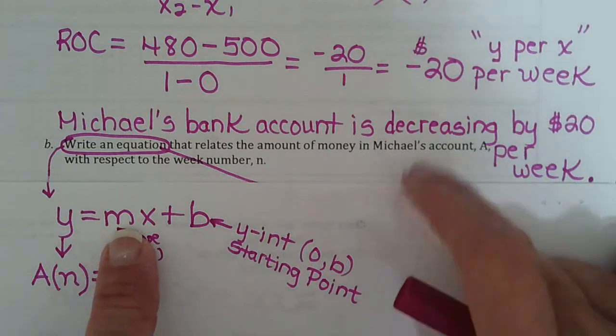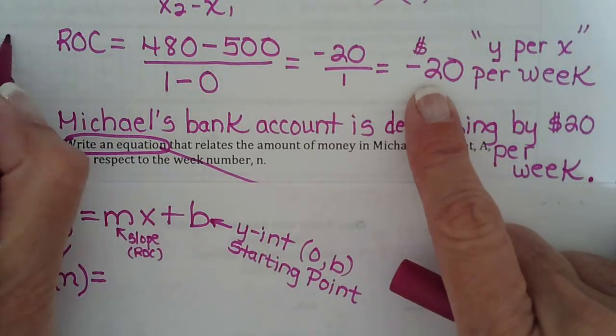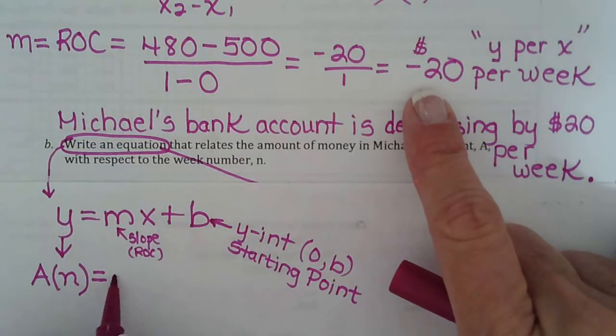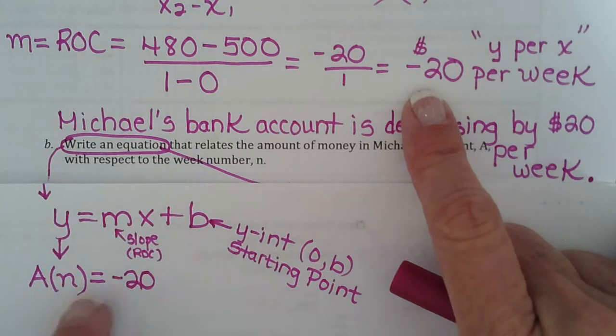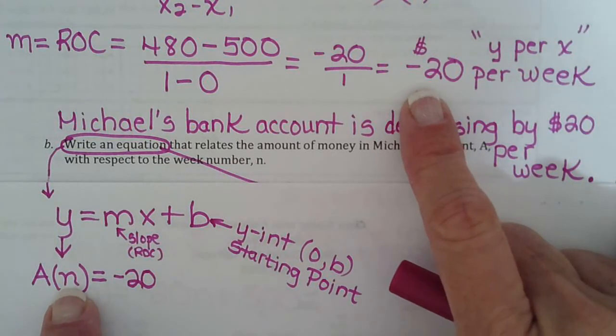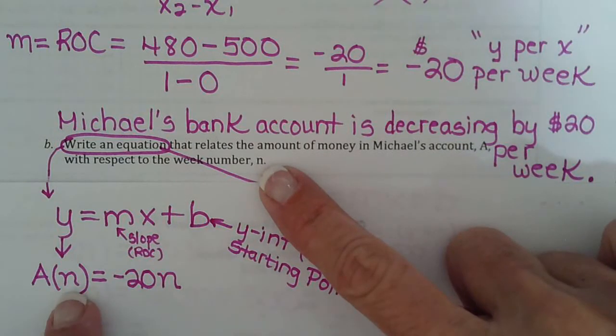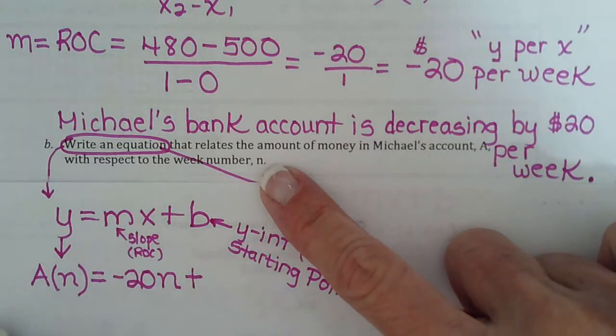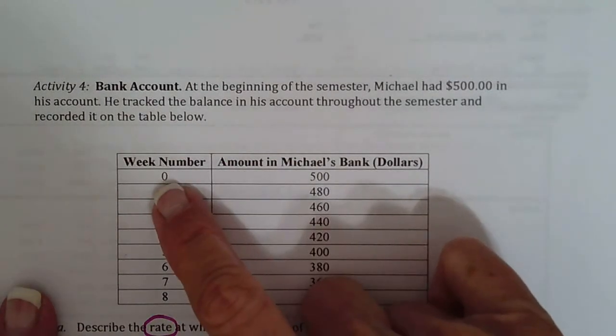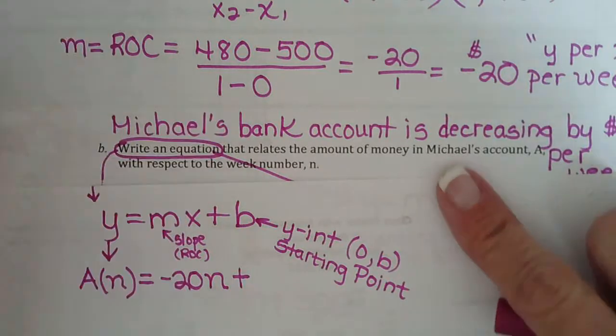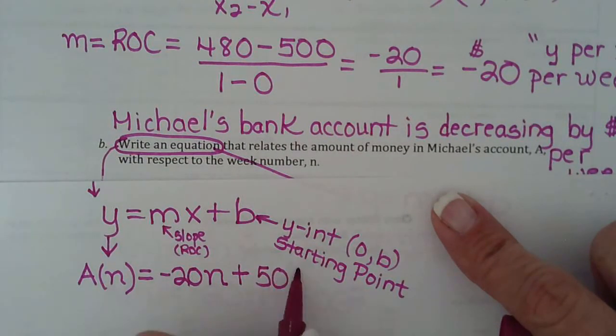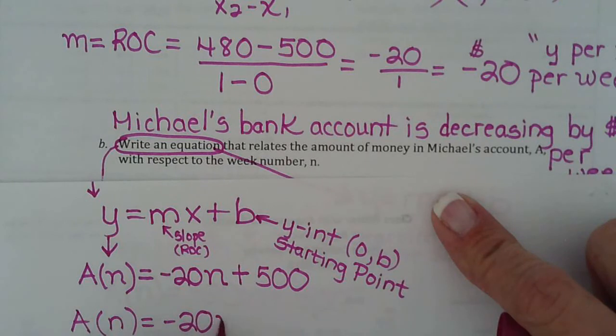Okay so now let's fill in. So m we found right up here is the rate of change because remember m and rate of change are the same thing. So we put negative 20 in place of m, x we look right here and we can see this is our x. So we write in whatever is in parentheses is our x and it's always going to be the lowercase letter so that's n plus what was our starting place. At 0 weeks that means at the beginning his bank account was 500. So our starting place is $500. So that is our equation a of n equals negative 20n plus 500.